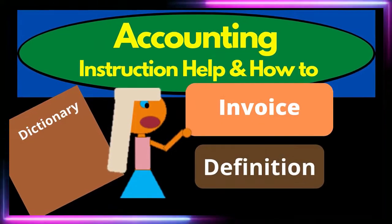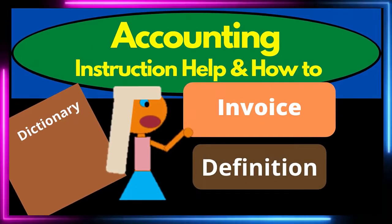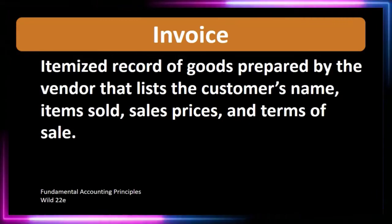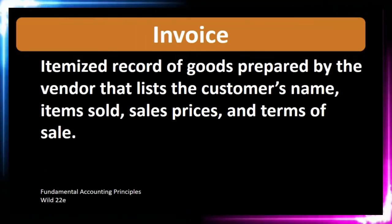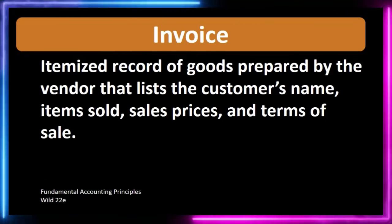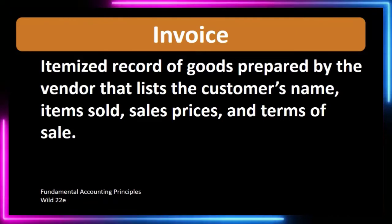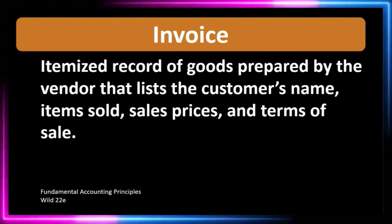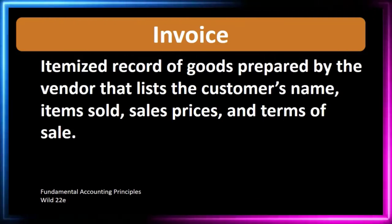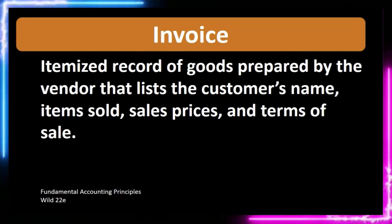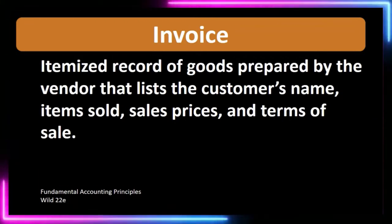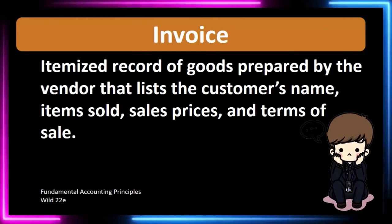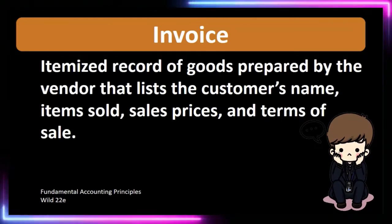In this lecture we're going to define invoice according to fundamental accounting principles, Wild 22nd edition. The definition of invoice is an itemized record of goods prepared by the vendor that lists the customer's name, items sold, sales price, and terms of sale. When we think about the invoice, we're thinking about that document that lists out the sale and the sales terms.